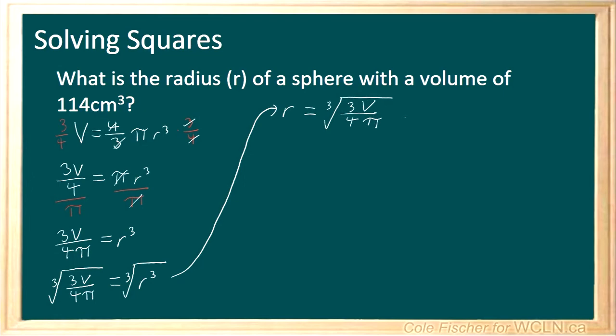So now that we have a formula for r, we can start substituting in our variables. In this example, we will consider pi to be equal to 3.14. So now we have r is equal to the cube root of 3 times 114 divided by 4 times 3.14.